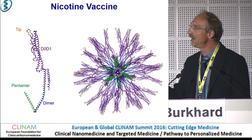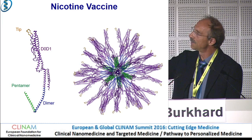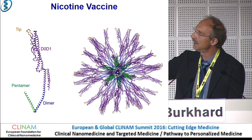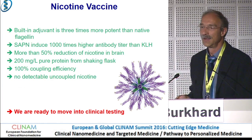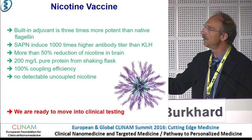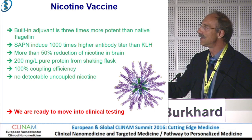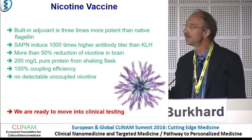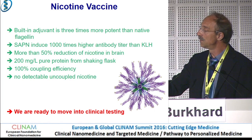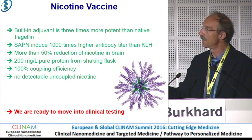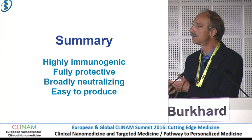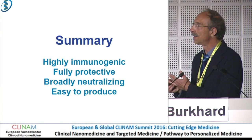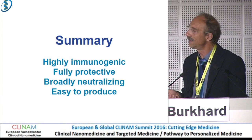For a nicotine vaccine, we take a nanoparticle that is 100% flagellin only. At the tip, we couple nicotine, and when it assembles, the nicotine molecule is displayed at the surface of the particle. We have very good immunogenicity — a thousand-times stronger immune response than with KLH. It is very stable and can be easily produced at large scale, so we are ready to move into clinical trials with this prototype as well. In summary, we have a highly immunogenic, fully protective, broadly neutralizing protein nanoparticle that can be used for various different vaccine applications, and it is very easy to produce.